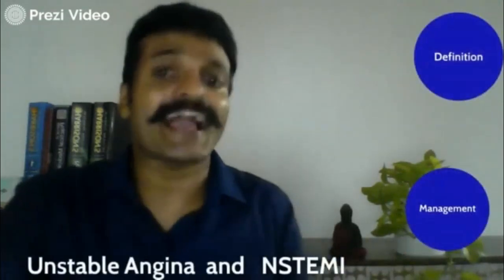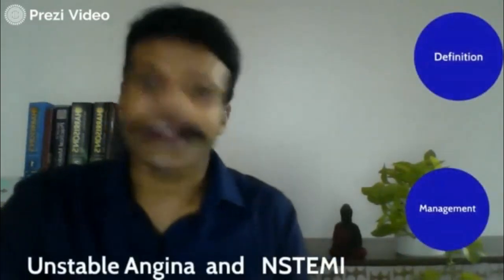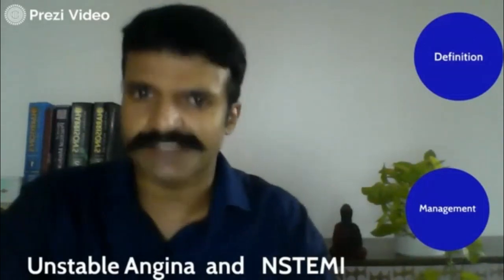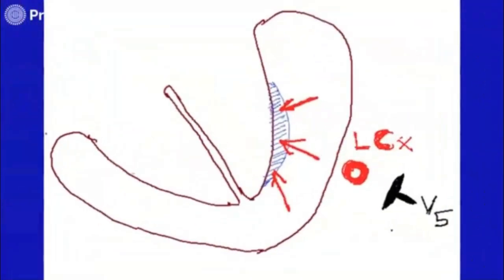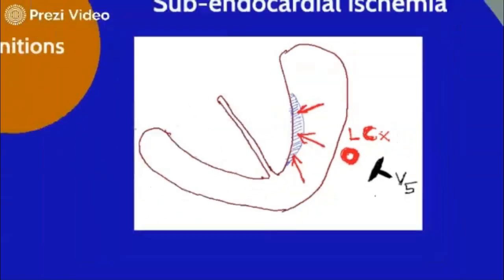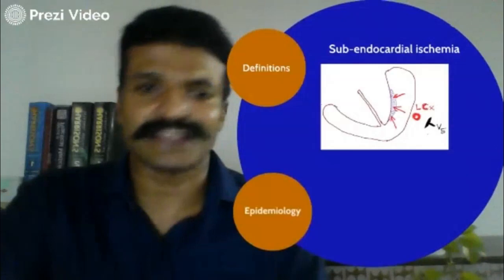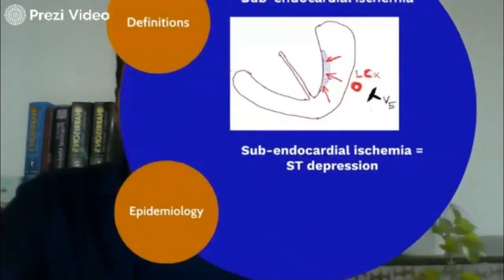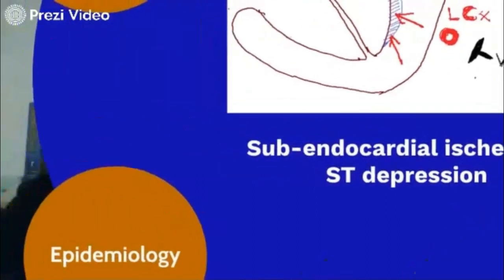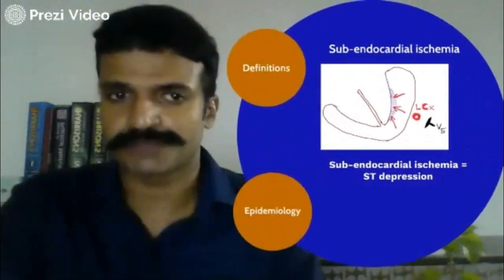Now we will be tackling another acute coronary syndrome, this time called unstable angina or NSTEMI. It is subendocardial ischemia, where you can see the injury current going away from the lead, and subendocardial ischemia that produces the classic ST change.